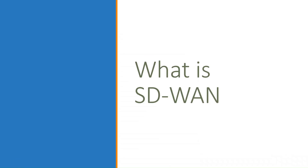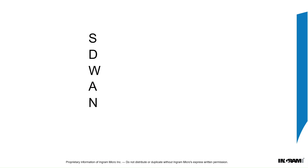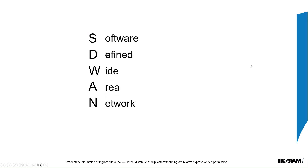Now let's dive into what is SD-WAN. SD-WAN is Software-Defined Wide Area Network. Essentially, this is software that is controlling all of your WAN devices and your connections to the internet, connections to other remote locations, and prioritizing the different traffic through the policies that you set forth.